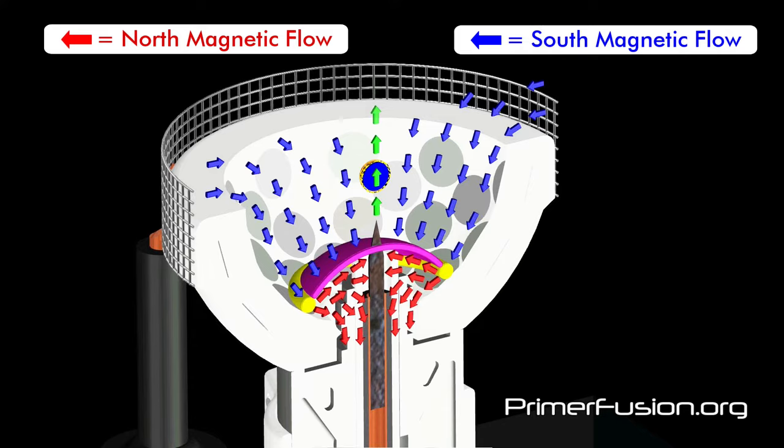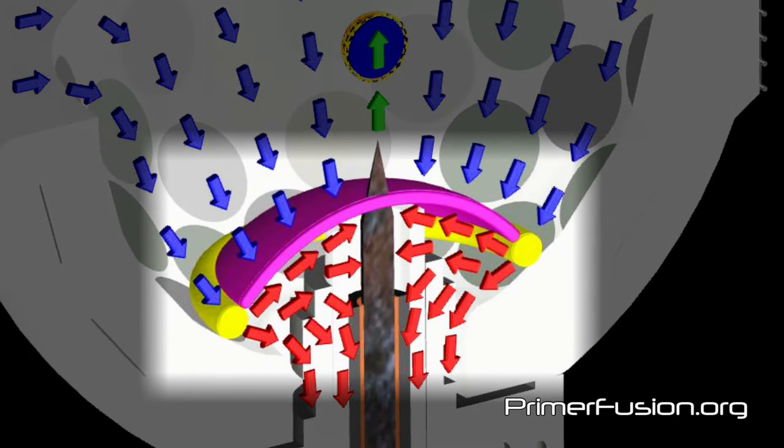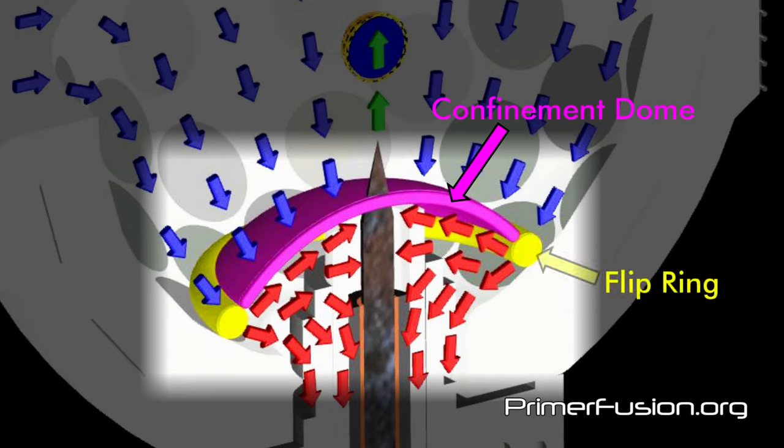If you have viewed my Primerfusion reactor videos, you will be familiar with two unique magnetic field structures within the bowl-shaped magnetic arrays that I refer to as the confinement dome and the flip ring.